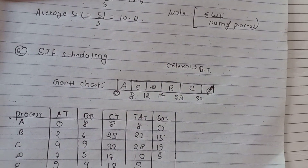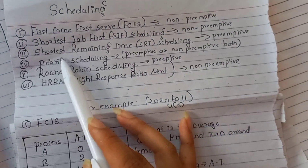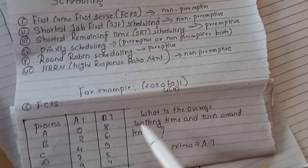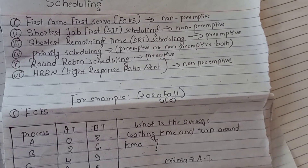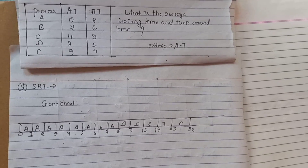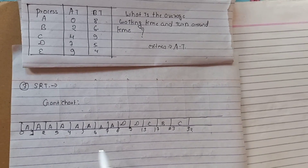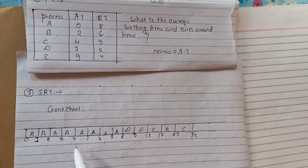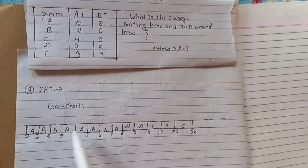Now we have a third process to solve. We will use Shortest Remaining Time — SRT — which is preemptive scheduling. We will increment the process one by one and track the remaining burst time at each unit.